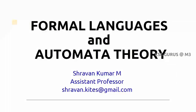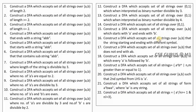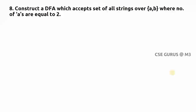Welcome to the class of Formal Language and Automata Theory. We will see question number 8: construct a DFA which accepts the set of all strings where the number of A's equals 2. It is not even length — only two A's should be there; for the remaining B's there is no constraint. So first I am writing the language L: number of A's equals 2.